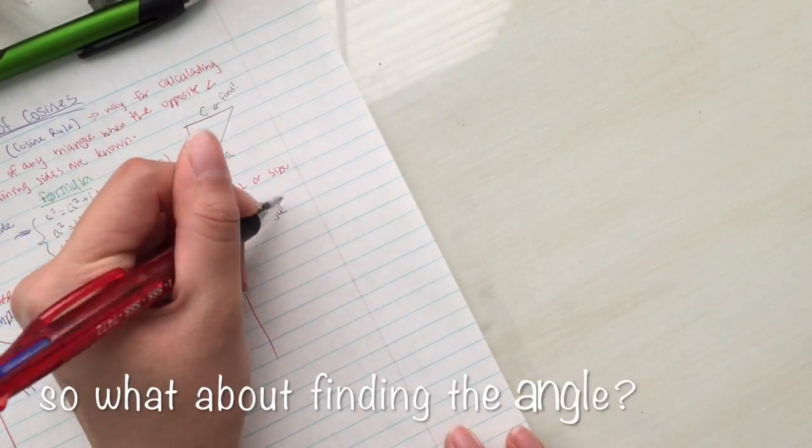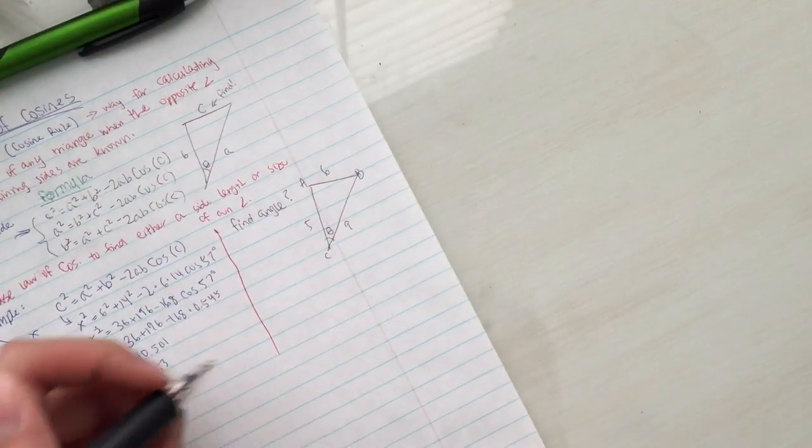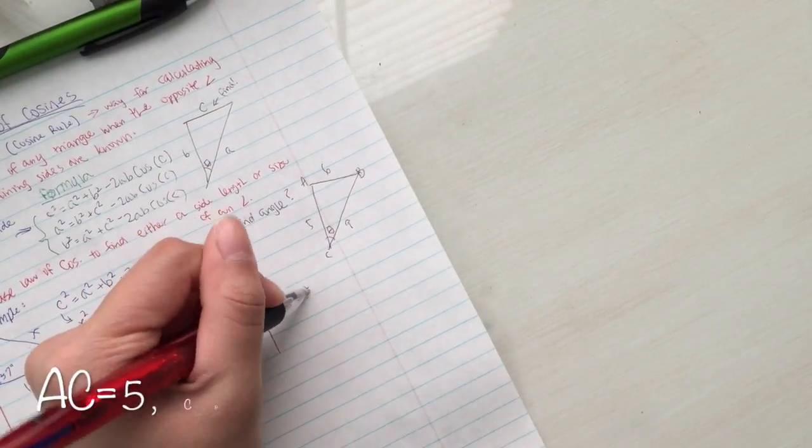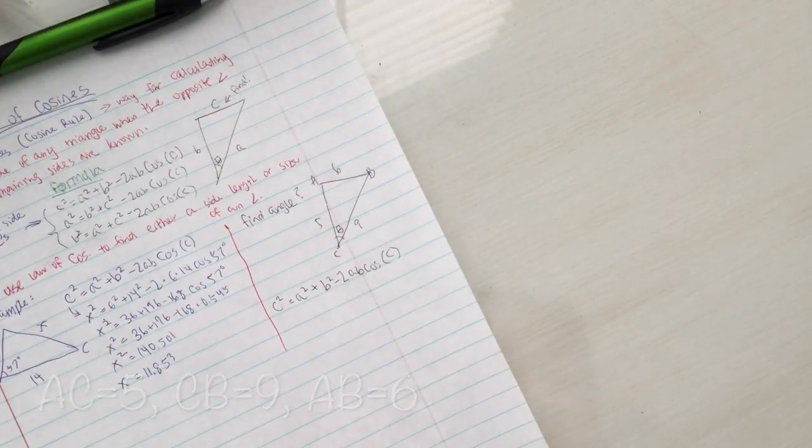In triangle ABC, as you can tell, the angle is not given, but all three side lengths are. If the side lengths are AC equals 5, CB equals 9, and AB equals 6...